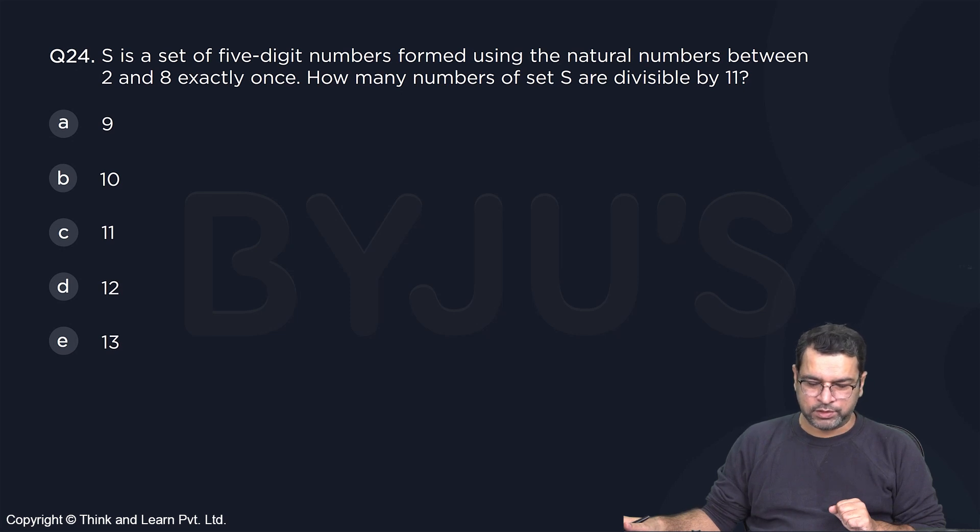S is a set of five-digit numbers formed using the natural numbers between 2 and 8 exactly once. How many numbers are divisible by 11?